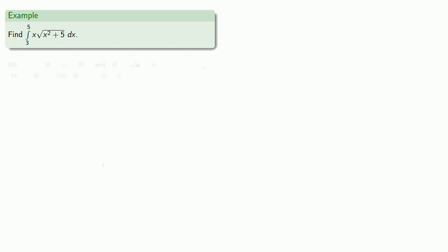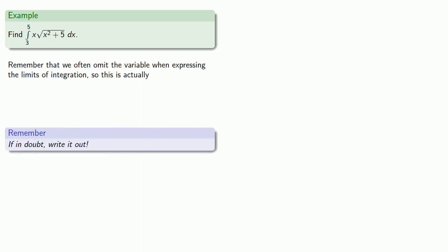Remember that we often omit the variable when expressing the limits of integration. But if in doubt, write it out. So this integral from 3 to 5 is actually the integral from x equals 3 to x equals 5.